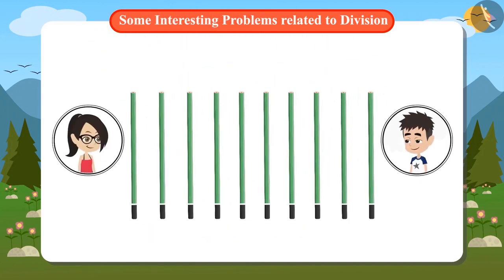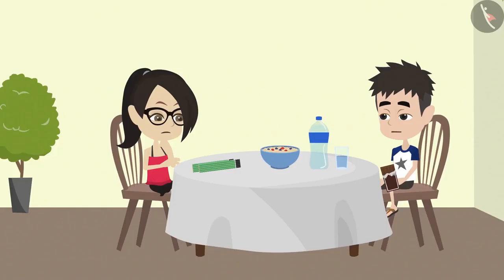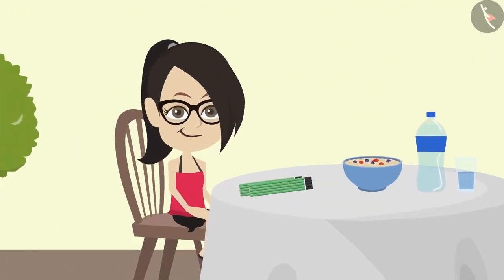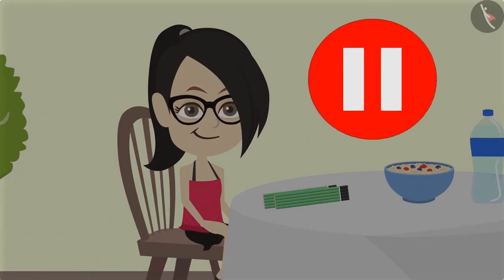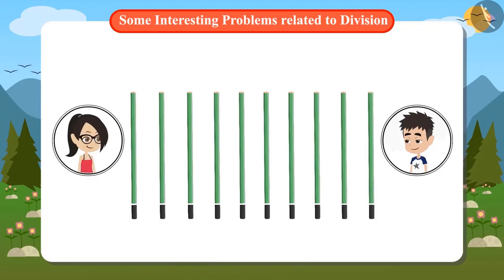Vandana has to keep half of these pencils with her and give half of them to her brother. But Vandana does not understand how she should distribute these pencils equally between two people. Can you help Vandana? Pause this video for a while and tell how many pencils Vandana will get and how many pencils will Vandana's brother get.